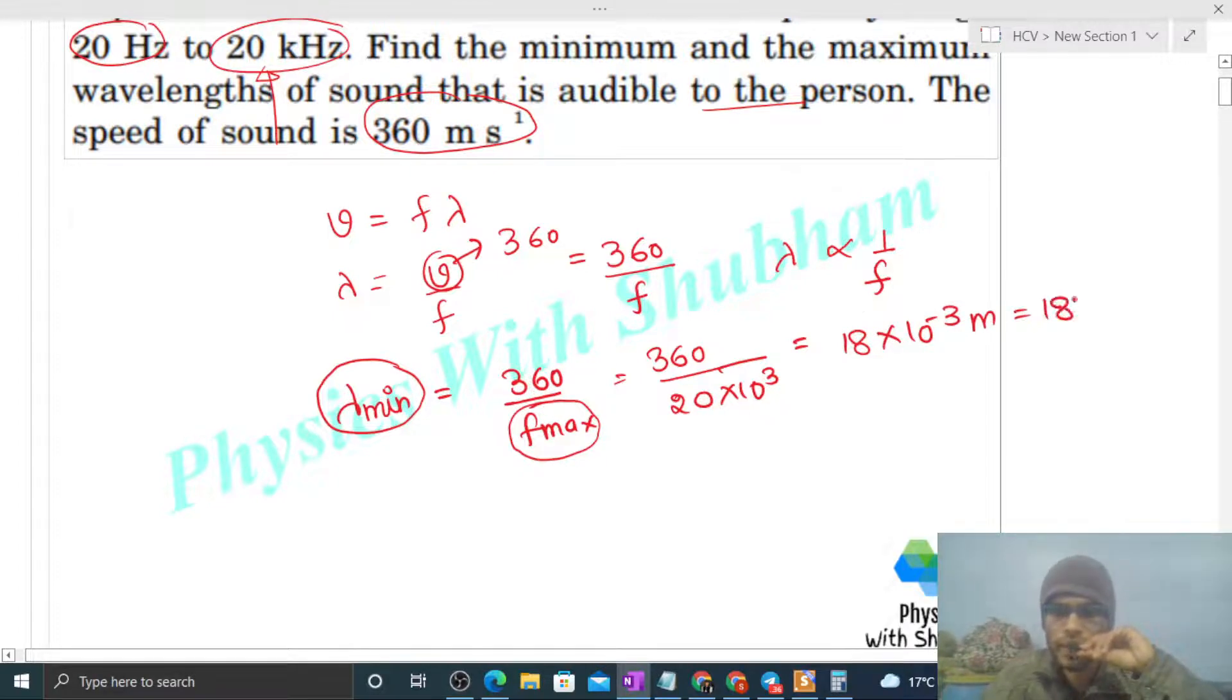And maximum wavelength will be for minimum frequency, right? Minimum frequency, minimum audible frequency is 20 Hertz, so just put the value: 360 divided by 20, so it will be 18 meter.